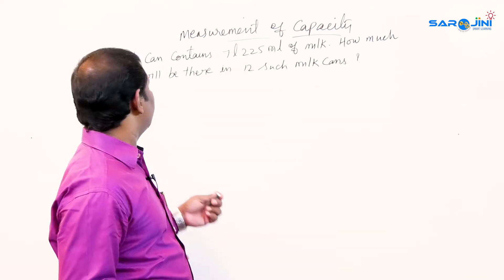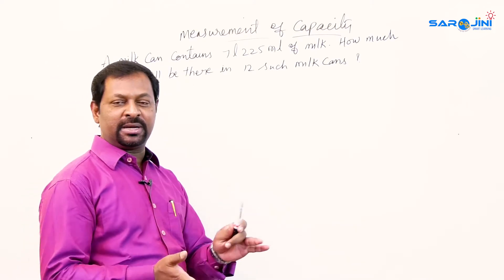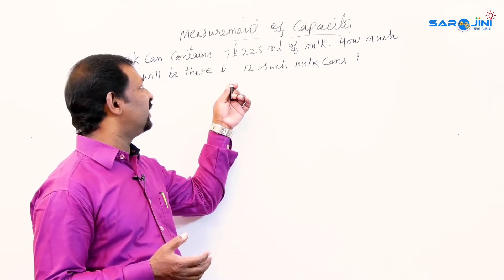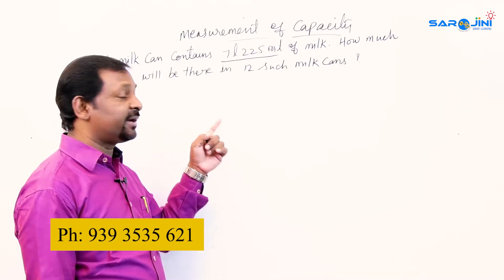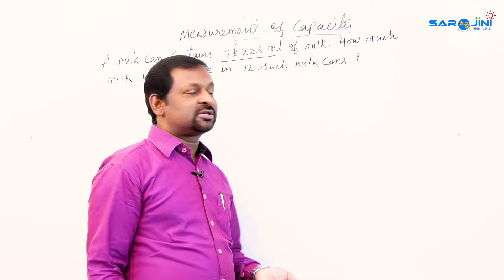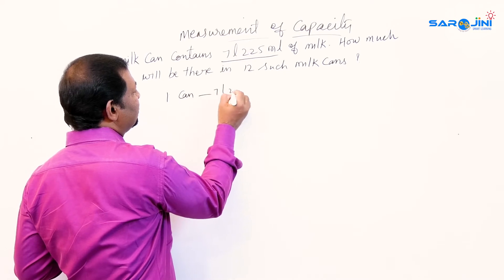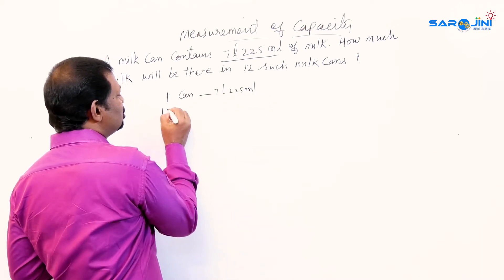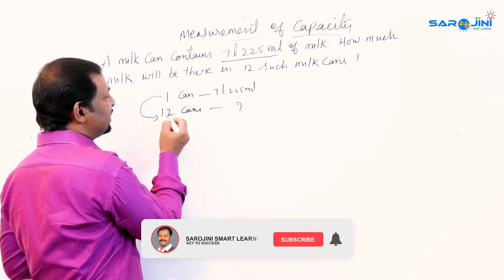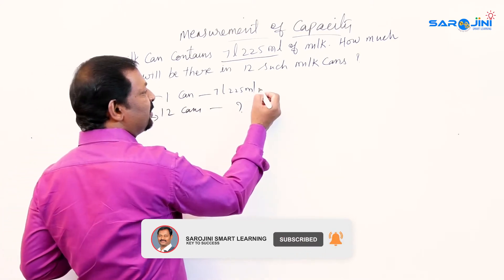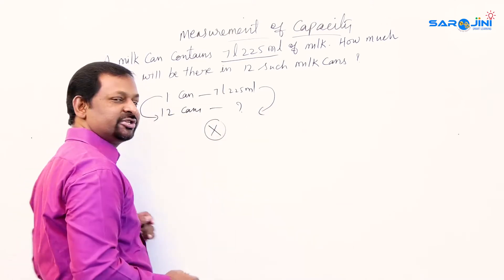The question is: a milk can contains 7 liters 225 milliliters of milk. The quantity of milk in one can is 7 liters 225 milliliters. How much milk will be there in 12 such cans? So one can holds 7 liters 225 milliliters of milk. When the number of cans increases to 12, the quantity of milk also increases.